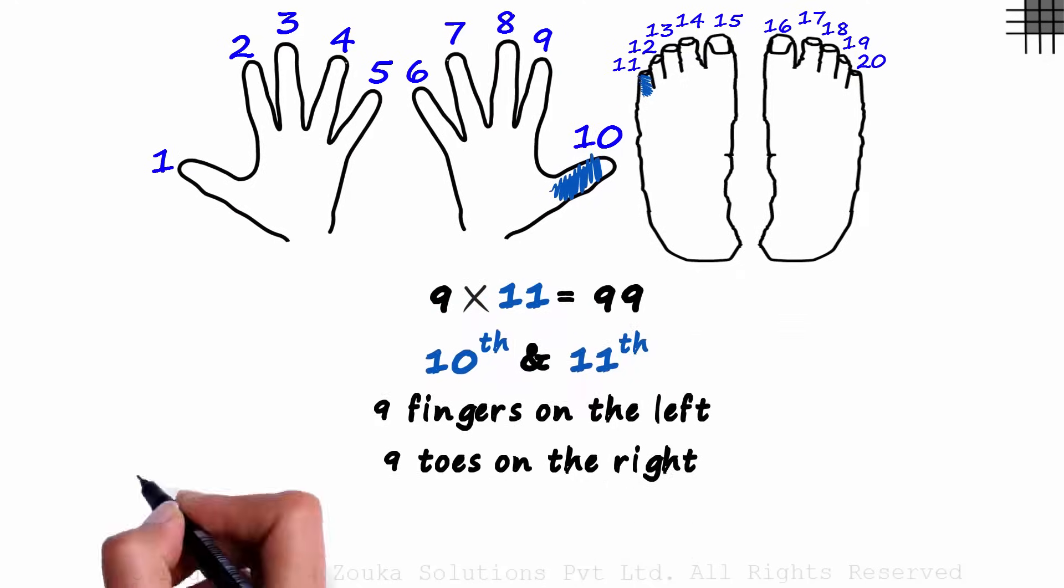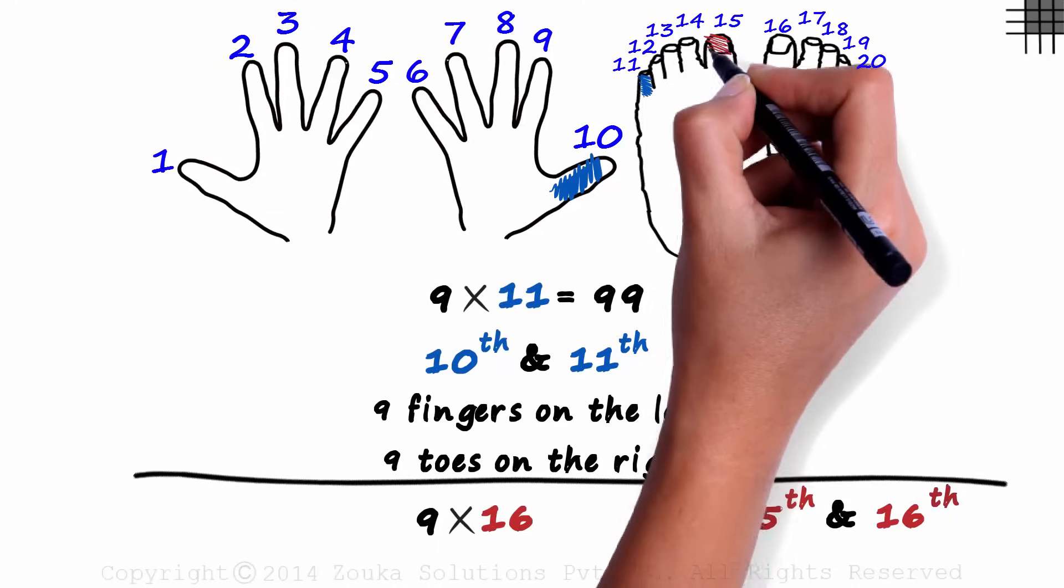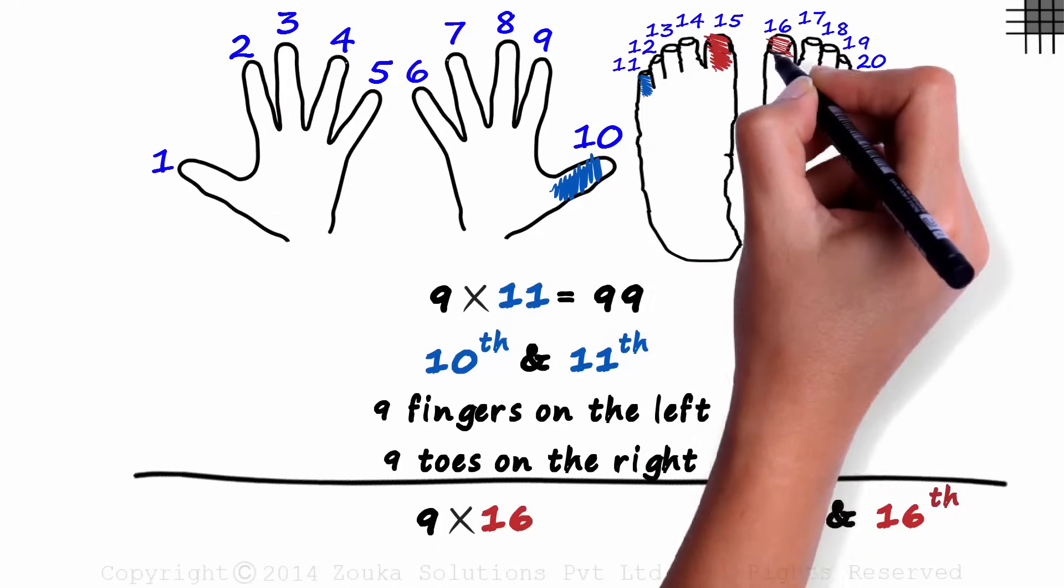Now I want you to try multiplying 9 with 16. I give you 5 seconds. As it's the 16th multiple we have to find, we look at the 15th and the 16th position. This is the 15th position and this is the 16th one.